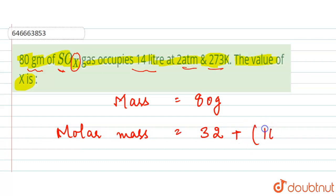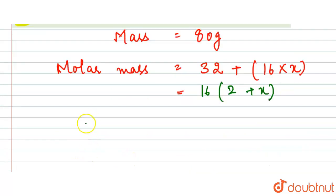It will be 16 times x. So we can write it as 16 times (2 + x). We got the molar mass. Now if we write the moles for this...